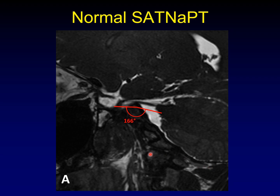This is an example of a normal sagittal angle of the trigeminal nerve at the porous trigeminus. Here is the root of the trigeminal nerve and its cisternal segment. The trigeminal nerve comes through the prepontine cistern and runs through the porous trigeminus to go into Meckel's cave. Once it's in there, it sprays out into a network of small rootlets. The angle we're concerned with is between the cisternal segment of the trigeminal nerve and the most superior of those rootlets.